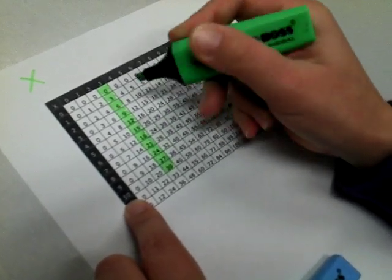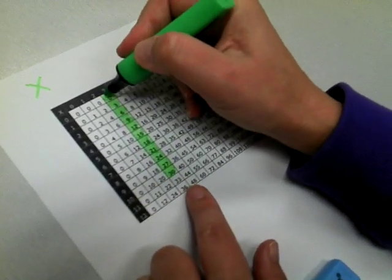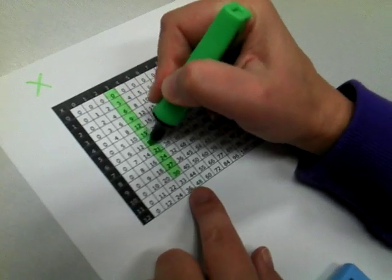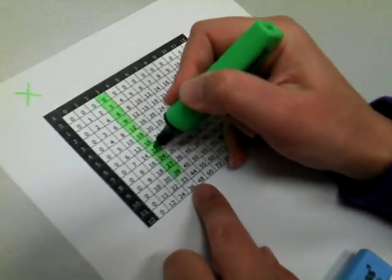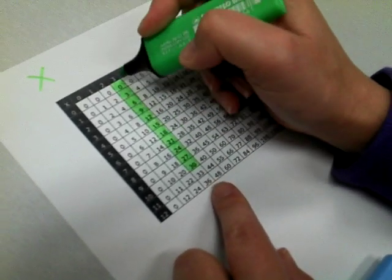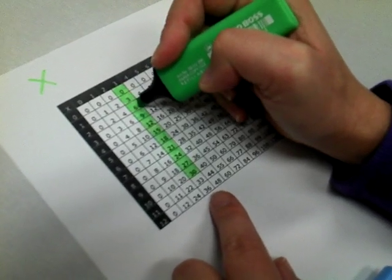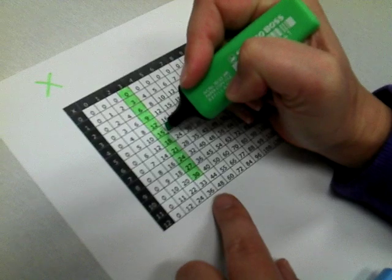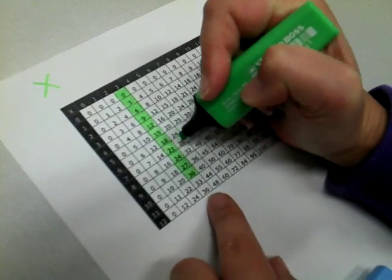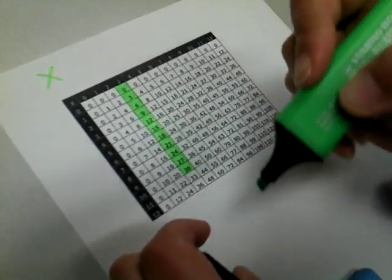So you can see, if we have a look down the column this way, it shows us how they jump in three. Zero, three, six, nine, twelve, fifteen, eighteen, twenty-one, twenty-four, twenty-seven, and thirty.